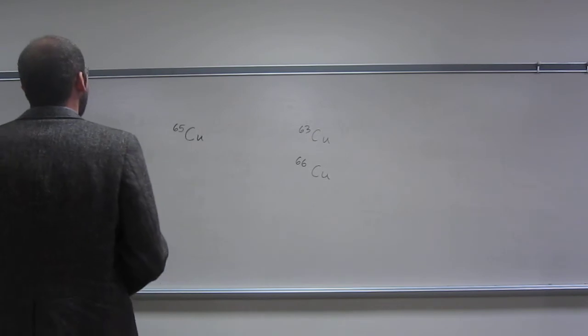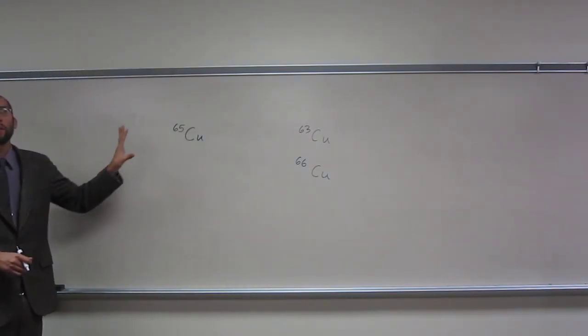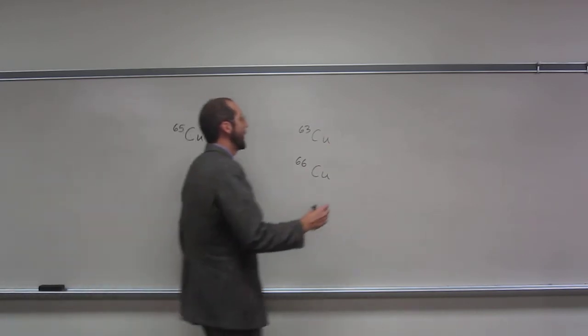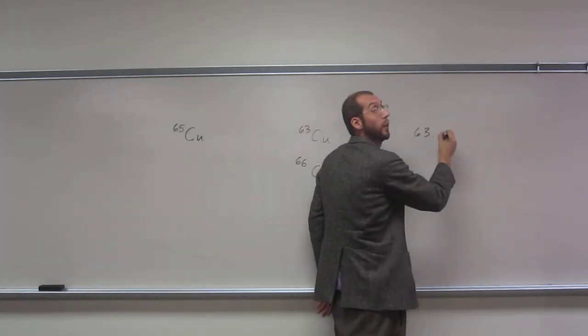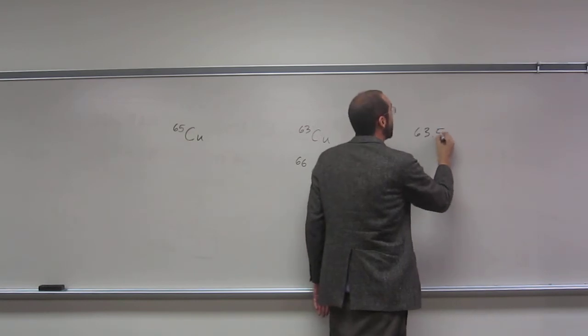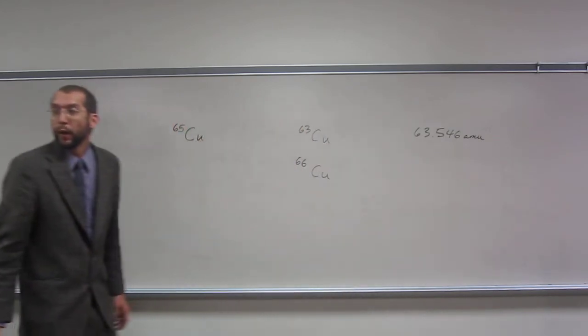Why 63 and 66? So if we look at the periodic table, it tells us that the mass of copper is 63.545. That's the average mass of a copper atom, right?